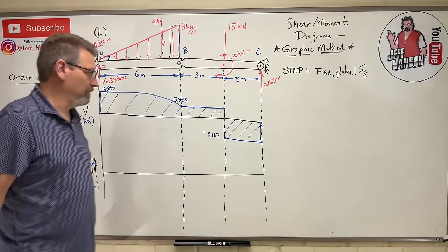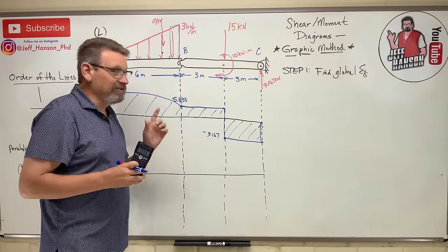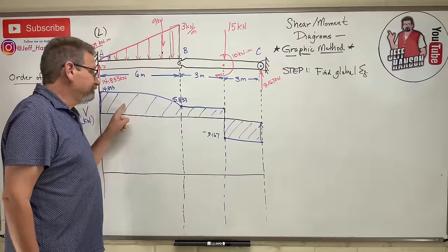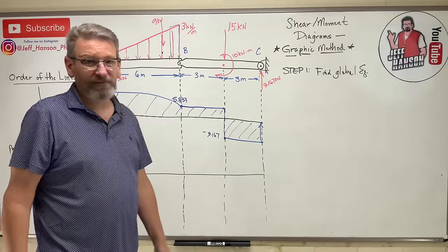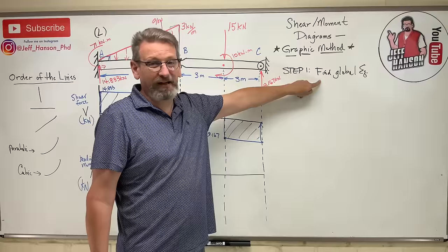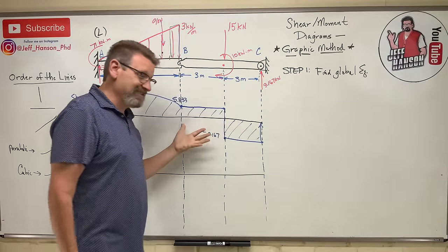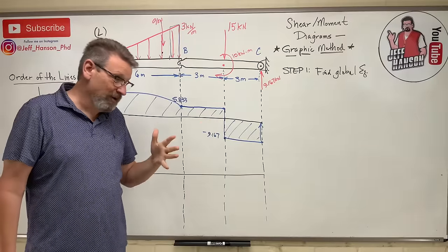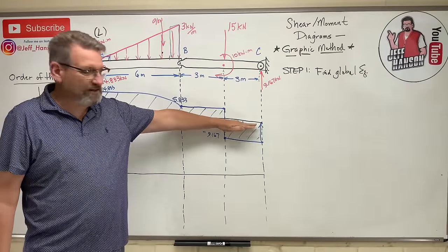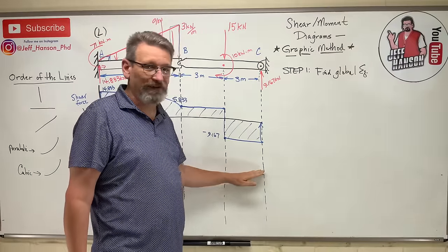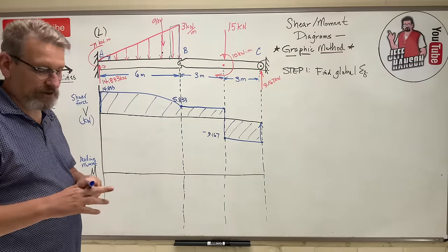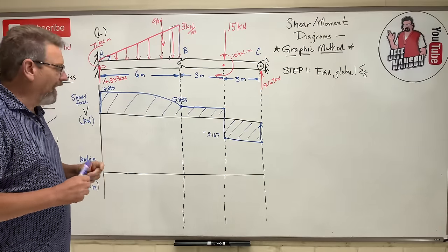You should always, always get back to zero on the V diagram. If you don't — say you end up at 17 — you've done something wrong. The sum of forces on the whole beam must be zero. Pro tip: if you don't get to zero, the mistake is all the way back in global equilibrium. Good news is these diagrams are self-checking — zero means you got it right.